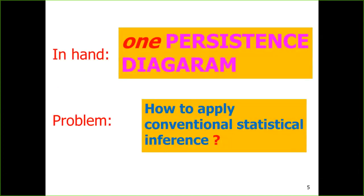Now, suppose we have only one persistent diagram, and we want to do some statistical inference. If we have only one persistent diagram, it's like we have one point in a sample. In order to do statistical inference, we need more points or more persistence diagrams. So how do we obtain more persistent diagrams when we have only one?